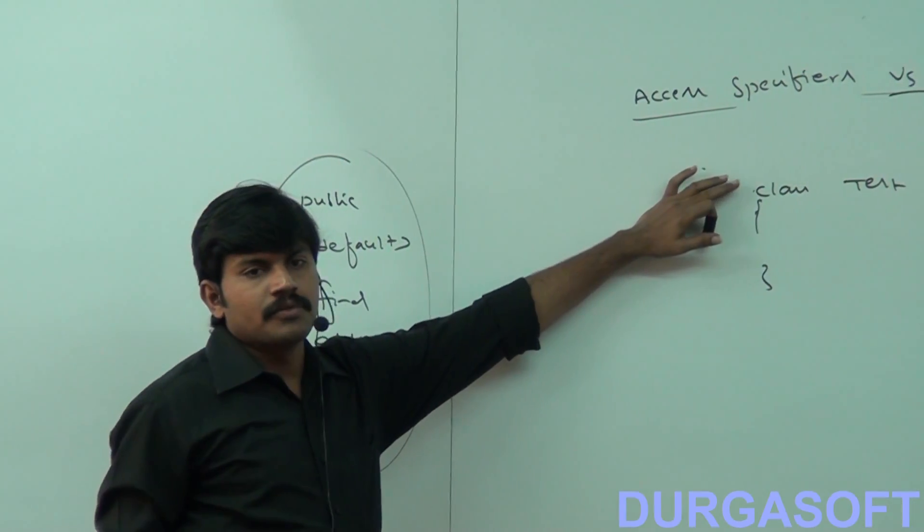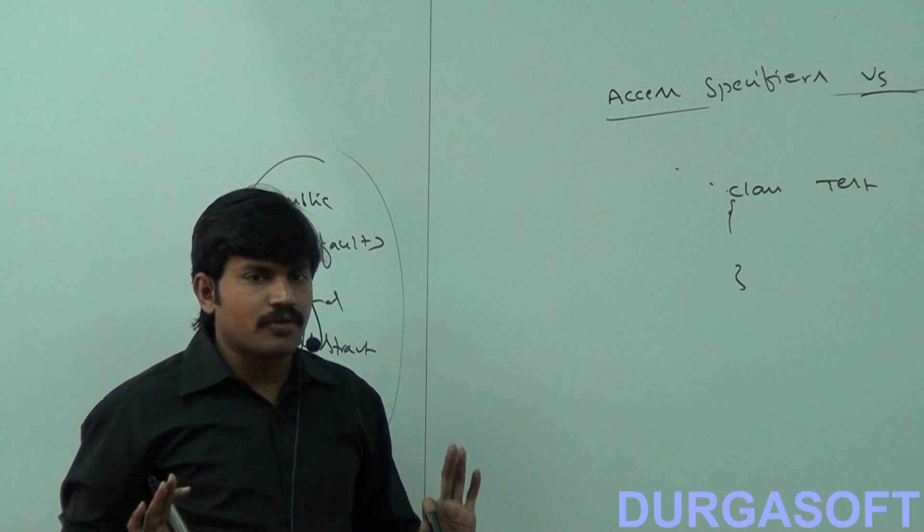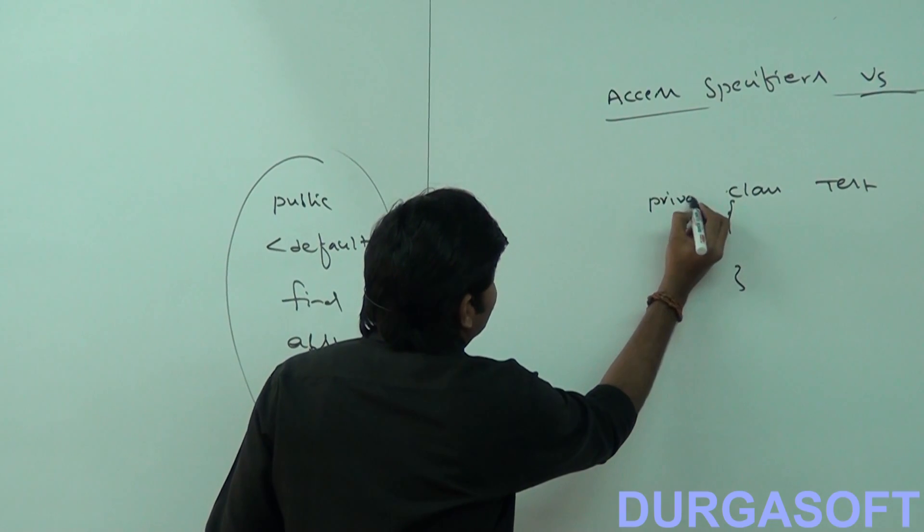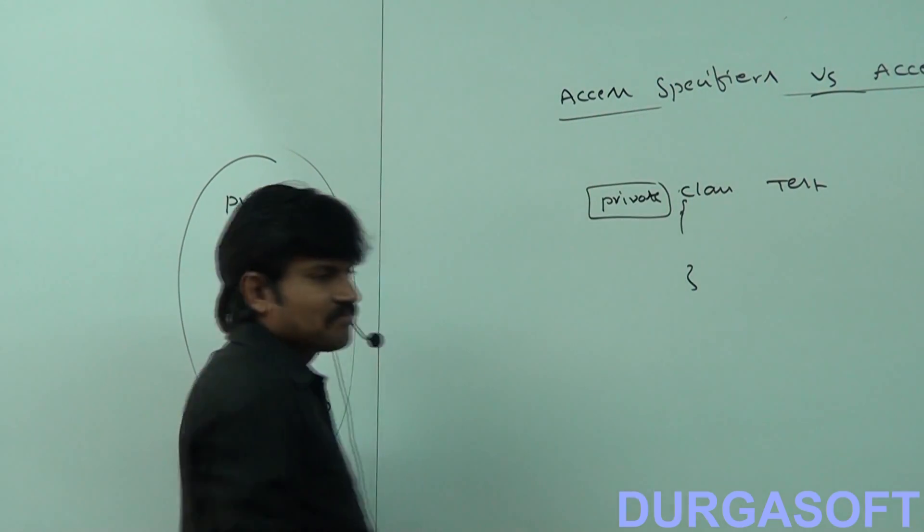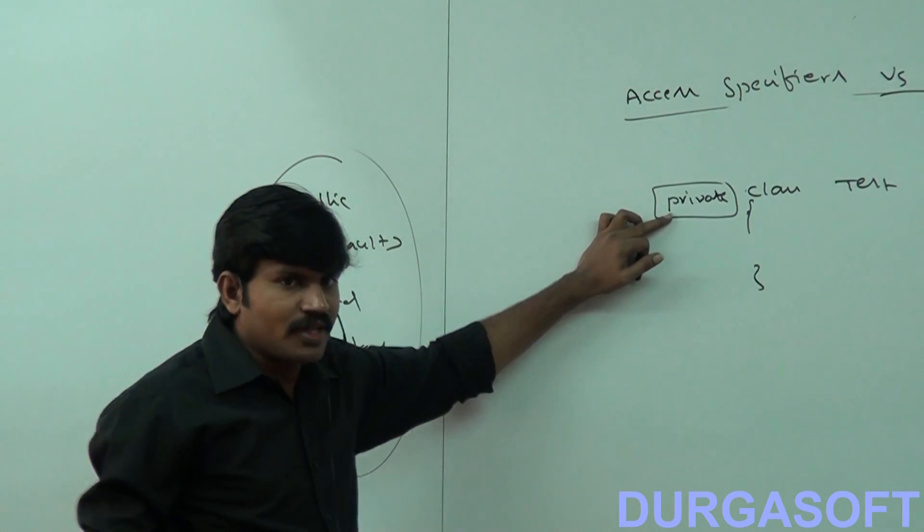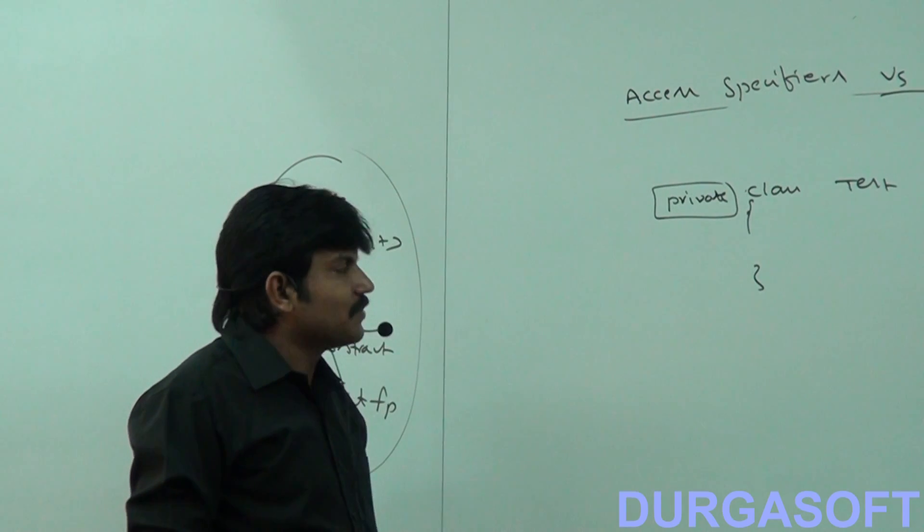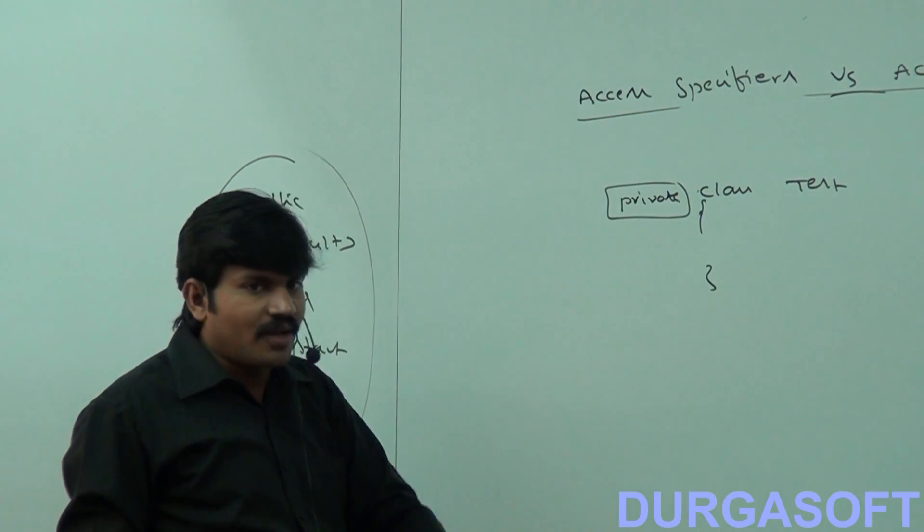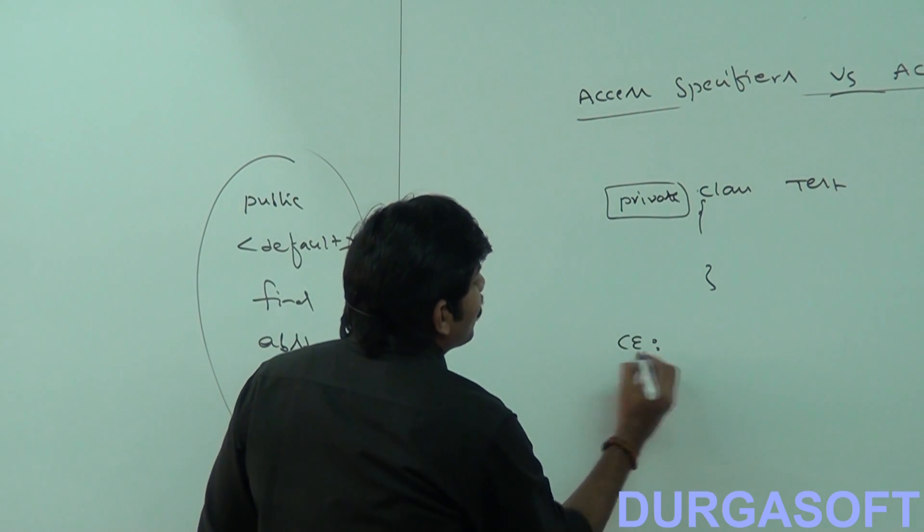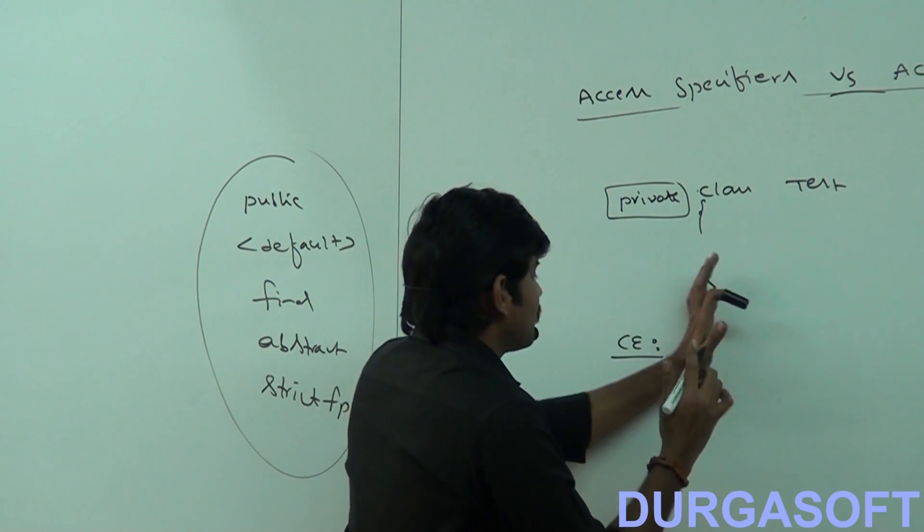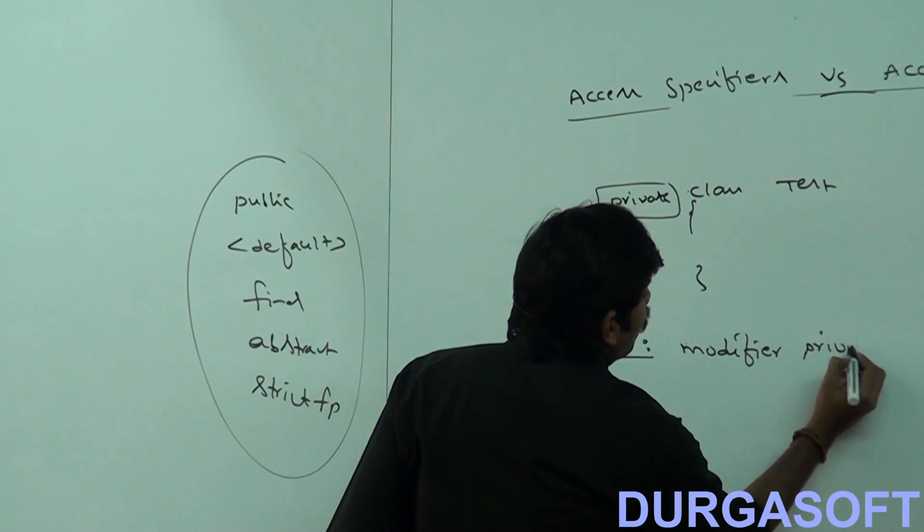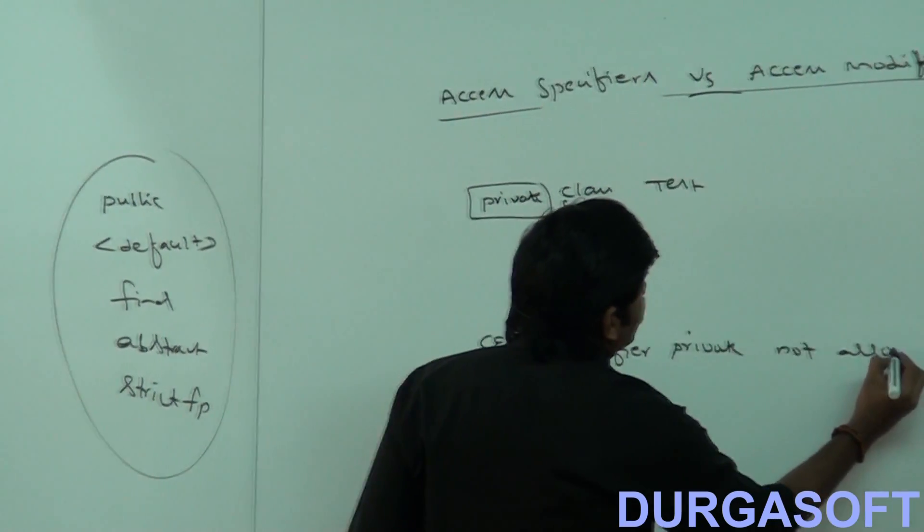By mistake, if you are using any other modifiers, compile time error you are going to get. Suppose, let me take private class test. Better to compile this code. So it is invalid, compile time error we are going to get. What compile time error we will get? Specifier private not allowed here, or modifier private not allowed here? Modifier private not allowed here.